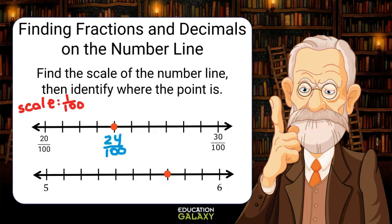The second number line starts at 5 and ends at 6, spanning 10 values. That means each mark is worth 1 tenths. Since the point is 7 marks past the 5, it would be 5 and 7 tenths.